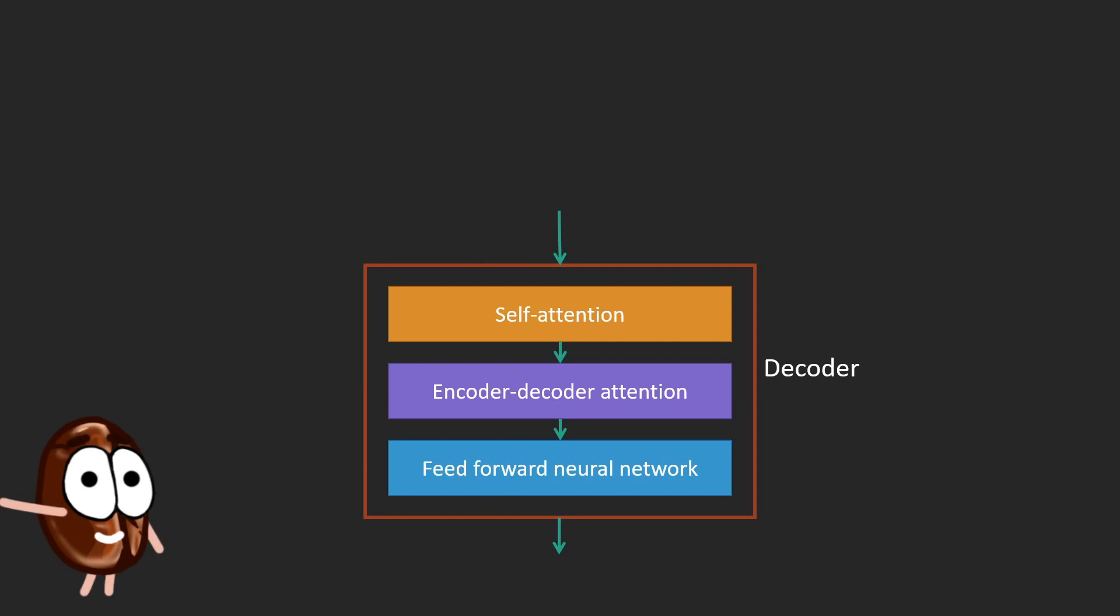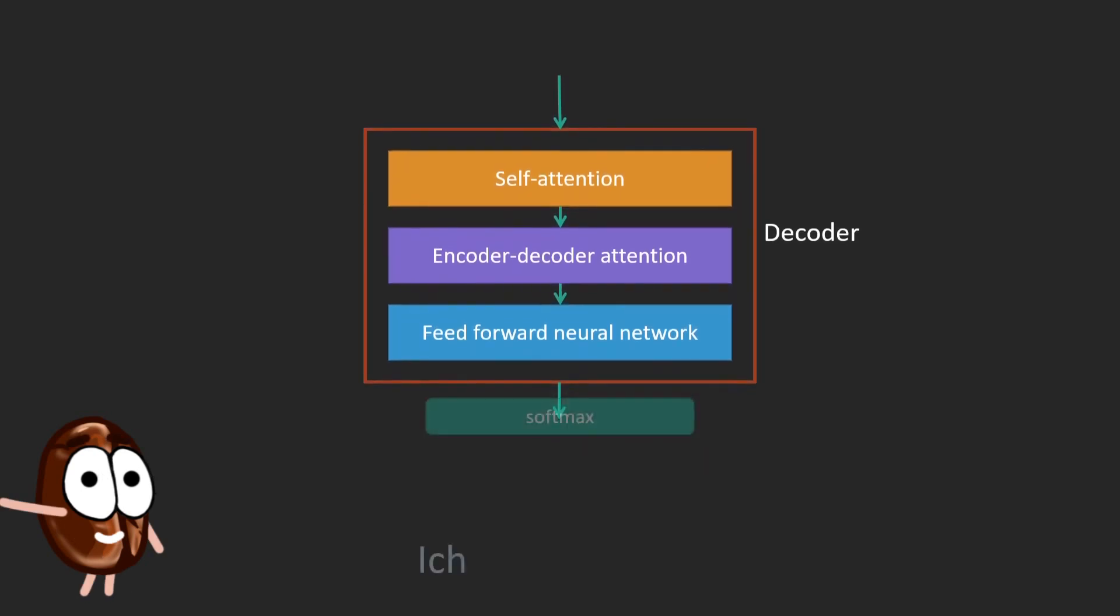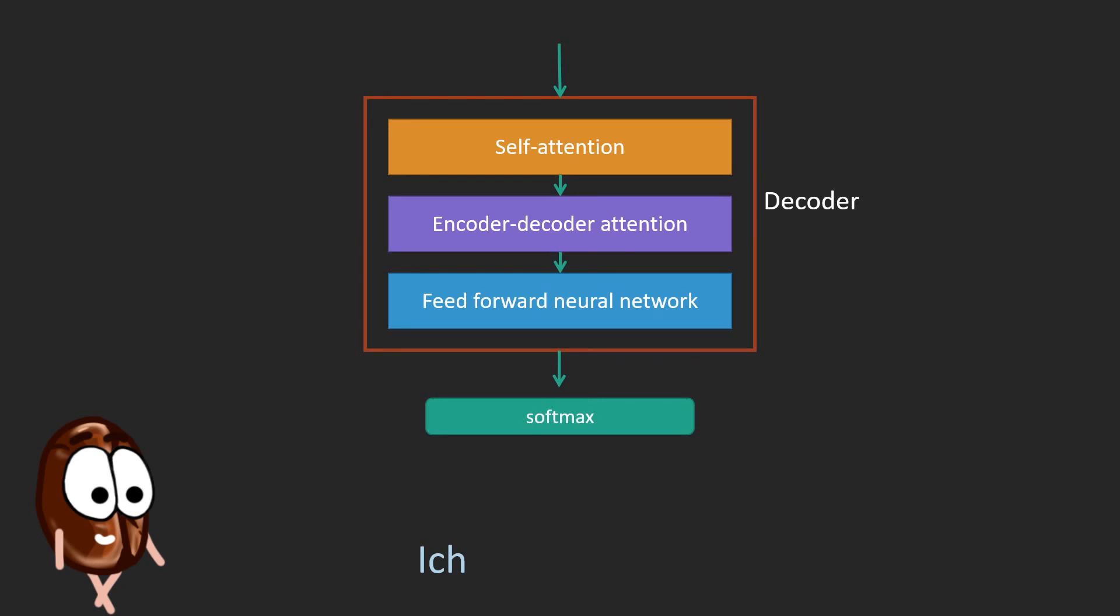And now for the final output computation, the very last layer of the network is the softmax layer, which assigns for each word in the vocabulary a probability and all these probabilities sum up to one. For visualization purposes, we listed only three words of a vocabulary that for English would consist of tens of thousands of words. The biggest probability here would be ideally Ich, as it translates to German the English I.